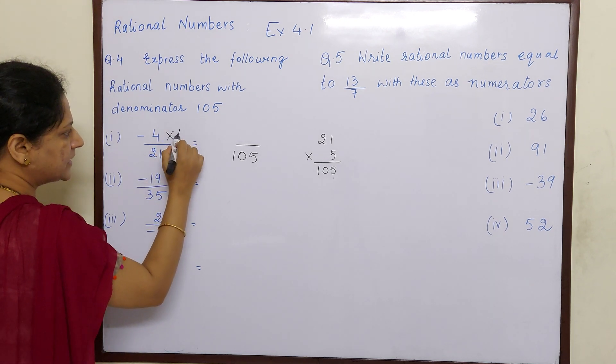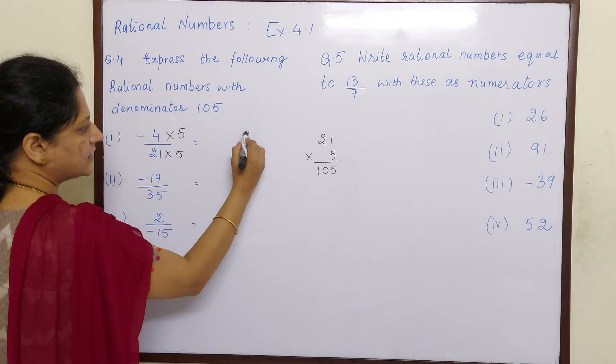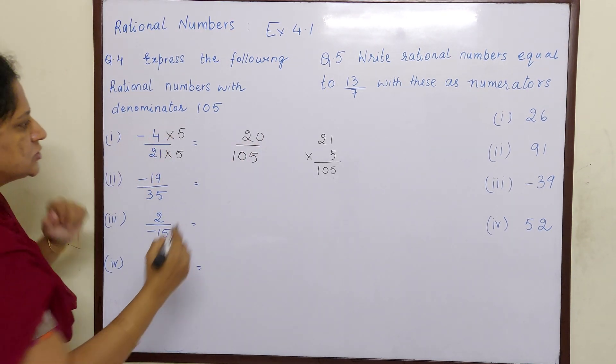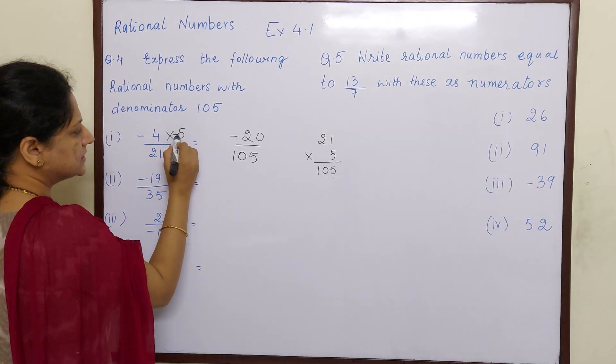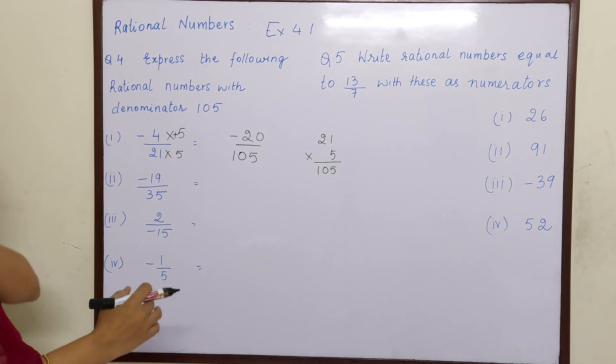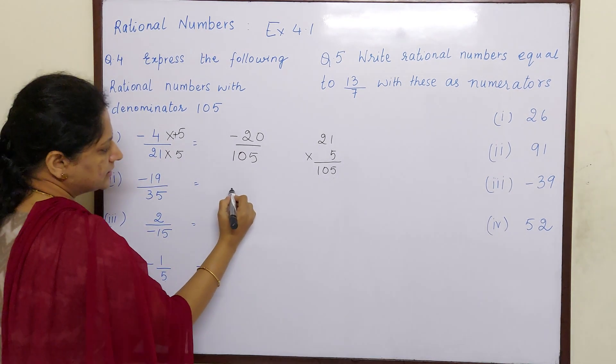That means the same number has to be multiplied in the numerator also. So 4 fives are 20 and this is minus sign, so minus into plus is minus because there is no sign with 5, means it is a positive sign. So minus 4 into plus 5 is minus 20.